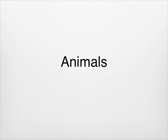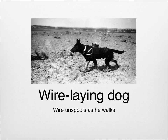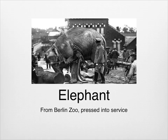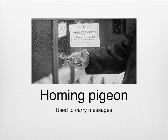Even animals had a part to play in the war. This dog is laying telephone wire for communications in the war zone. Horses were commandeered at the beginning of the war, but combatants on both sides soon saw they would be useless as cavalry mounts. Instead, horses were used as beasts of burden, pulling caissons and ambulances. This German zoo elephant did his part for the Kaiser. Pigeons were vital to the war effort on both sides because modern communication — the telephone and radio — was often too delicate to function under bombardment and the harsh conditions of the war zone.